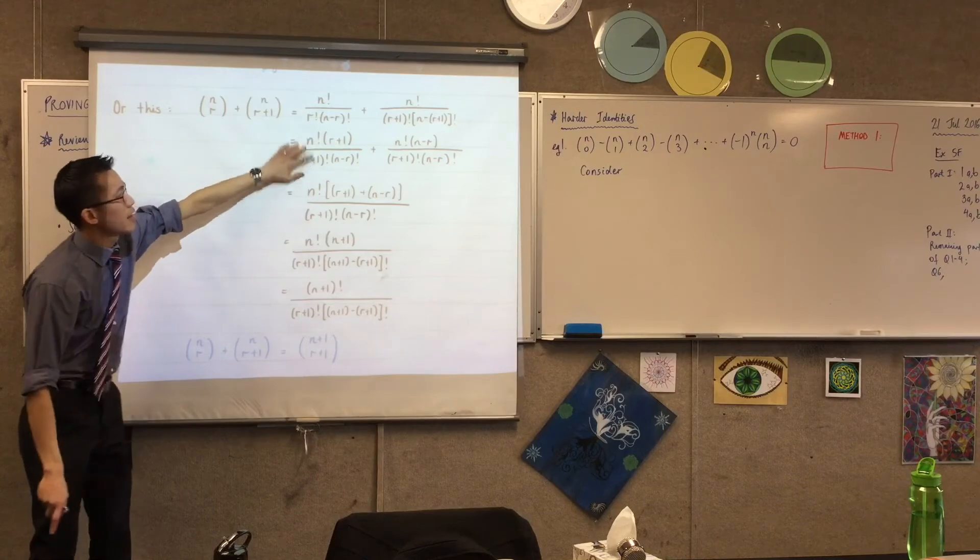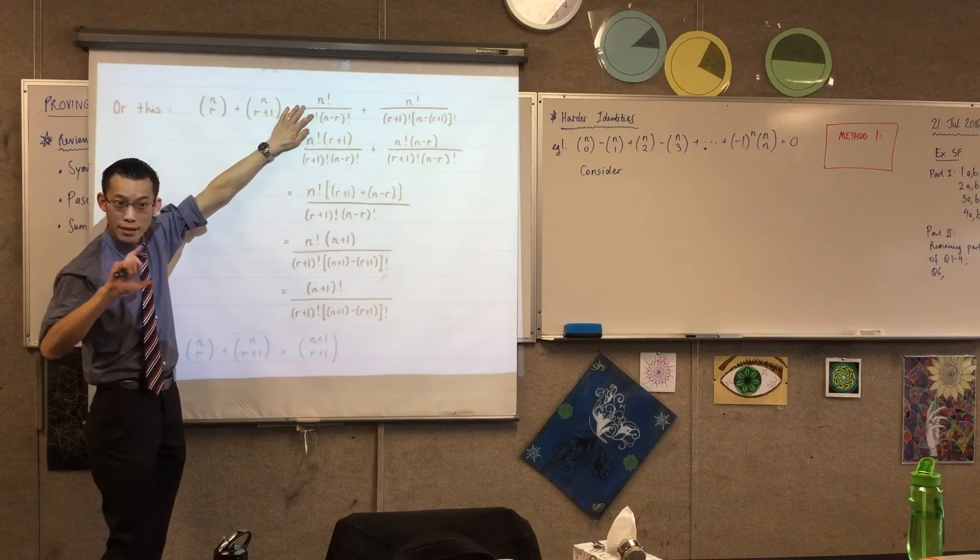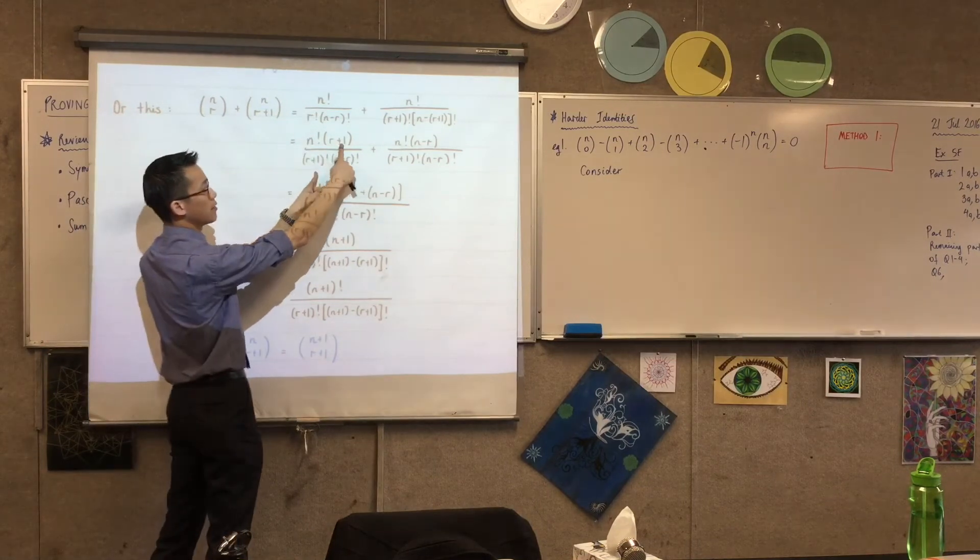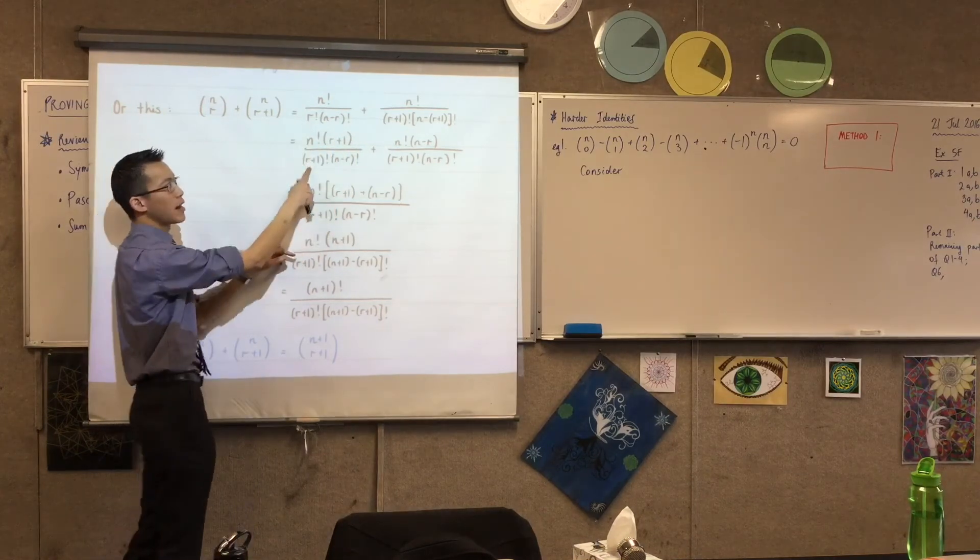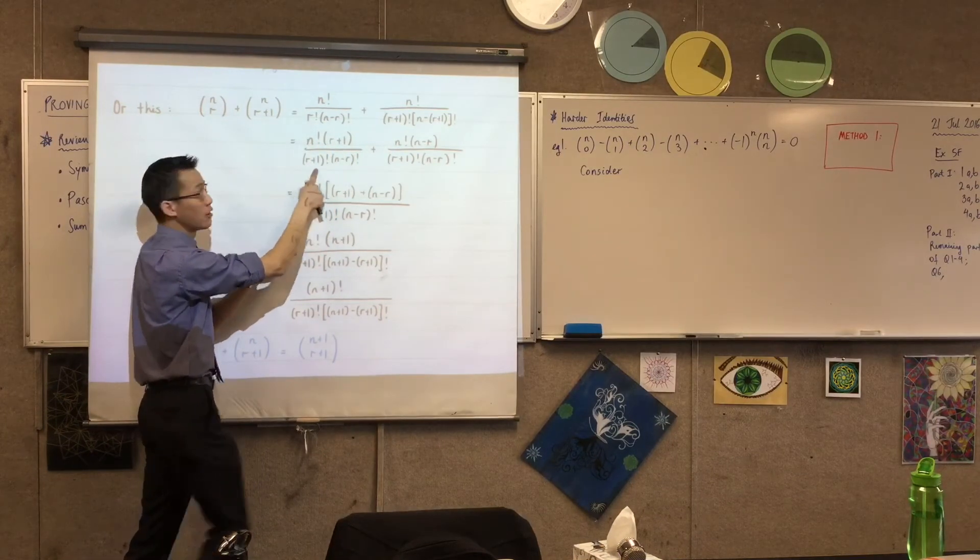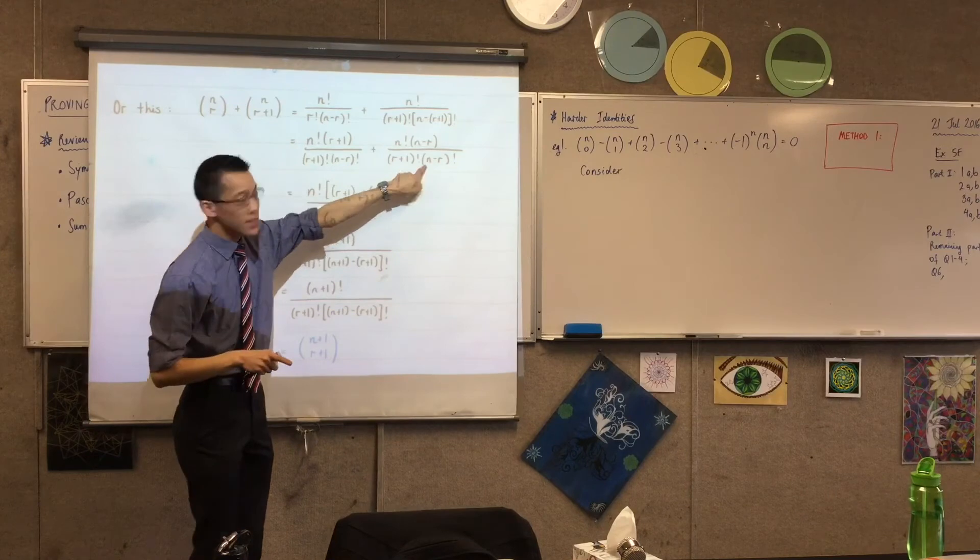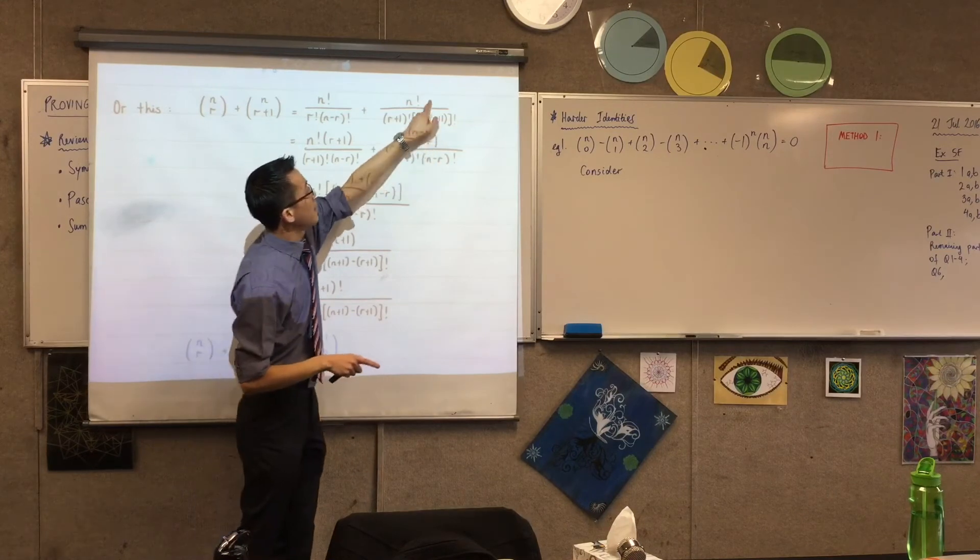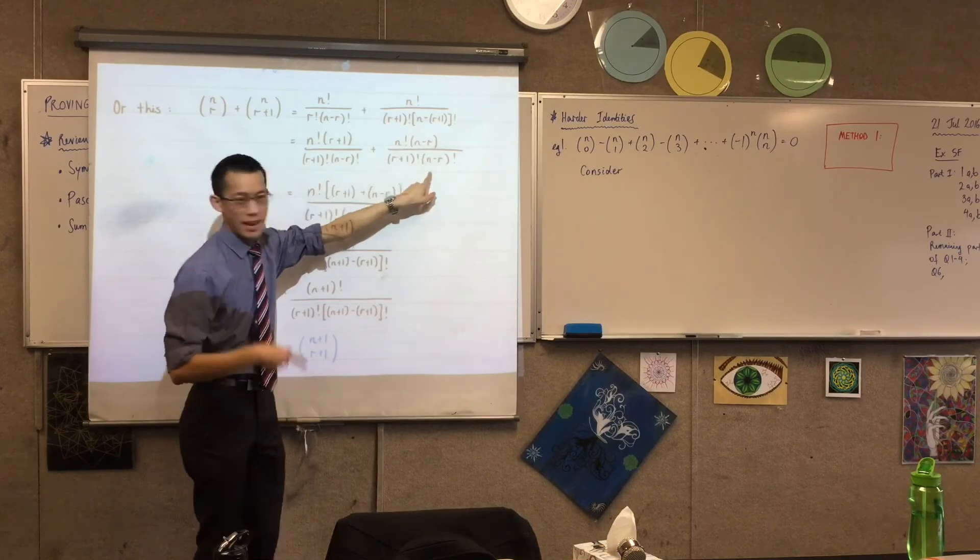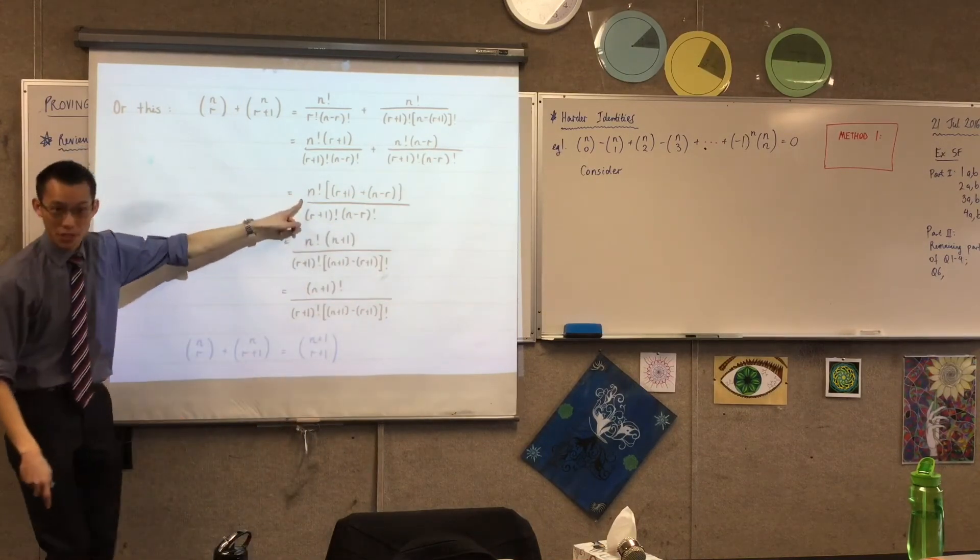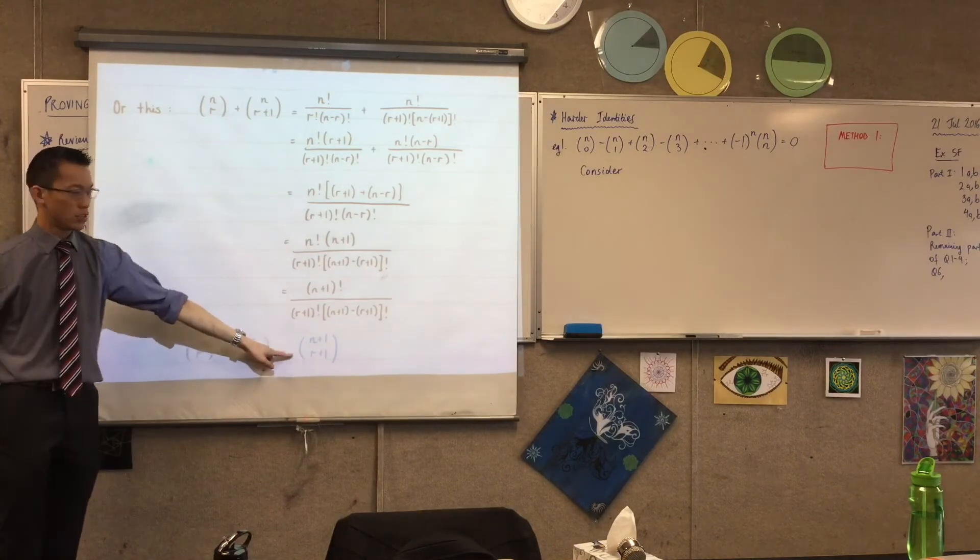Can you see what I've done from this line to this line on the first fraction? What have I done from here to here? I've multiplied the numerator and denominator by r plus 1. Do you see why I did that? Because that r plus 1 on the top will turn this guy into an r plus 1 factorial. That will give me a common denominator. Do you see that? I chose to also multiply this one by n minus r and n minus r. Do you see that? That turns this into n minus r factorial. Now I've got a common denominator and then you just have to be careful with your algebra and out pops the result that you needed.